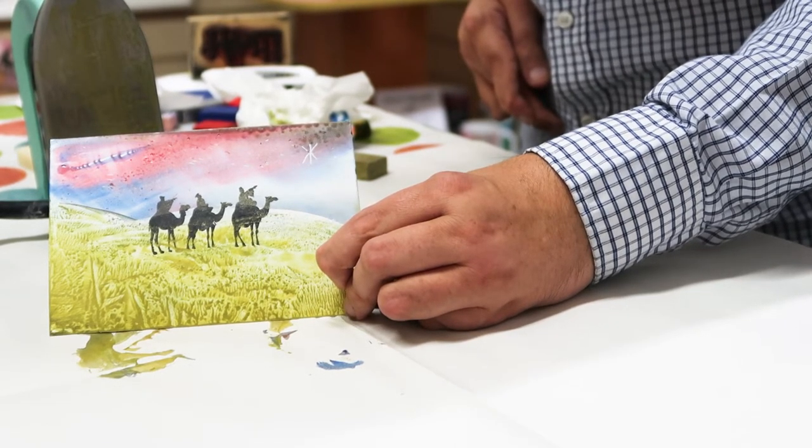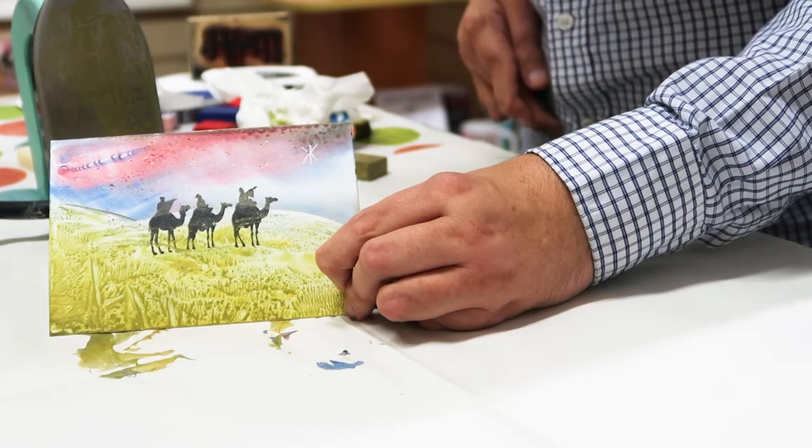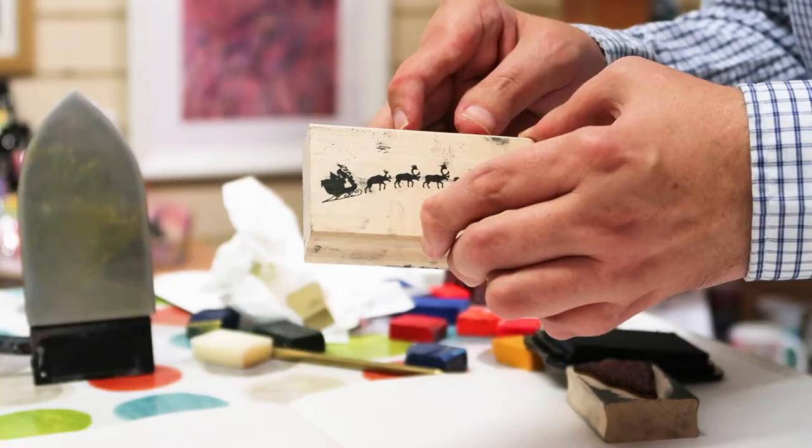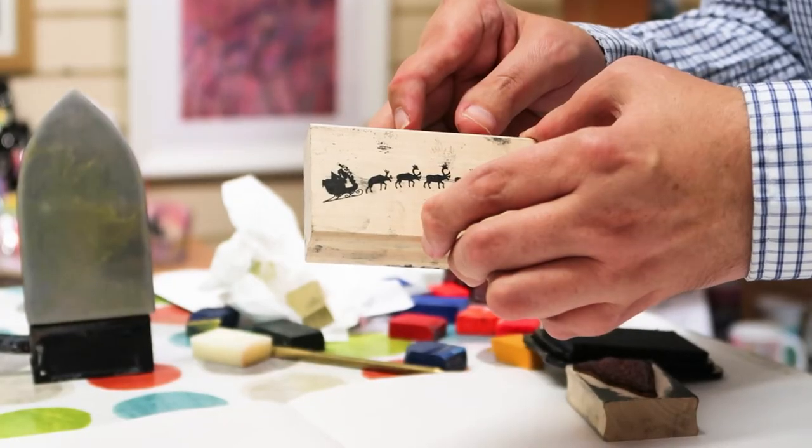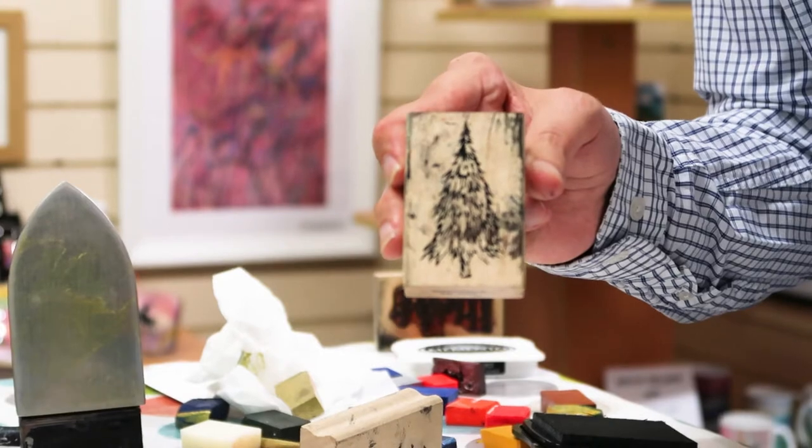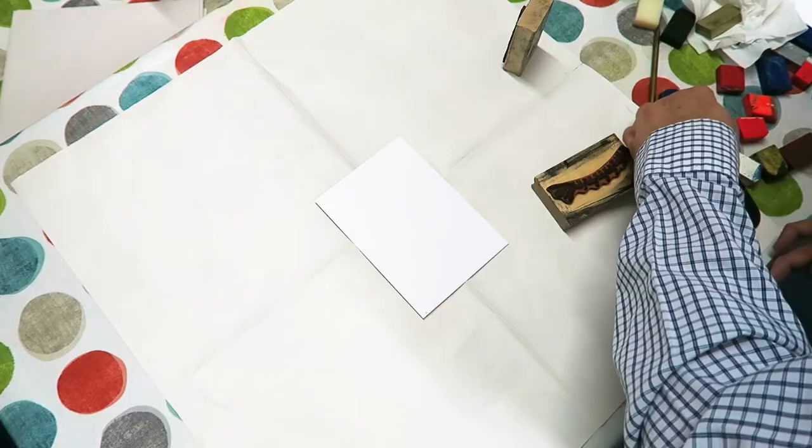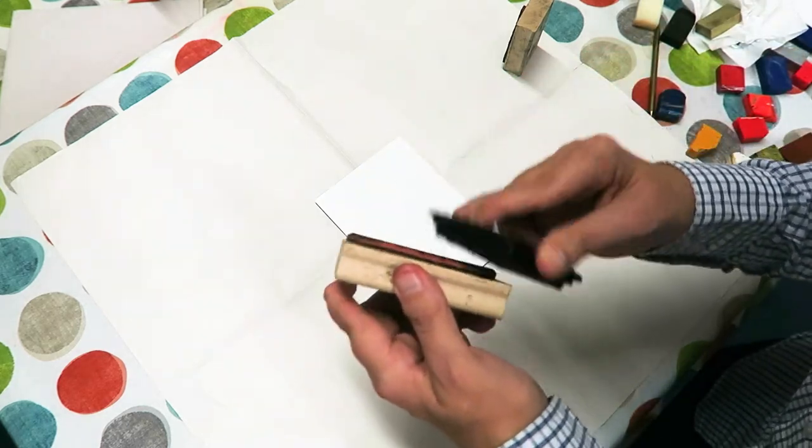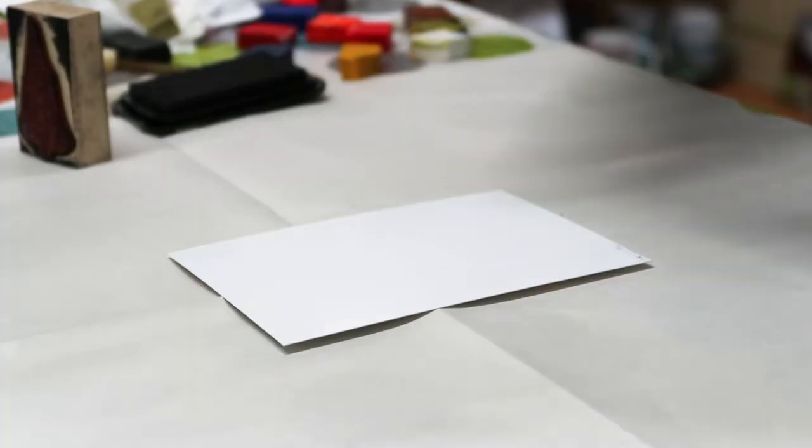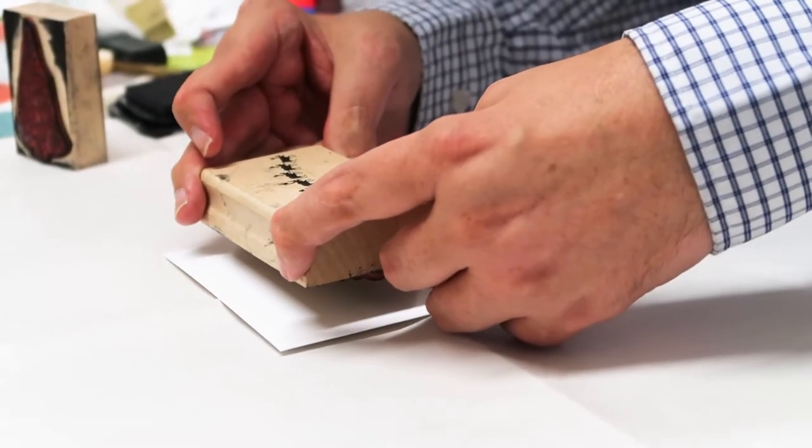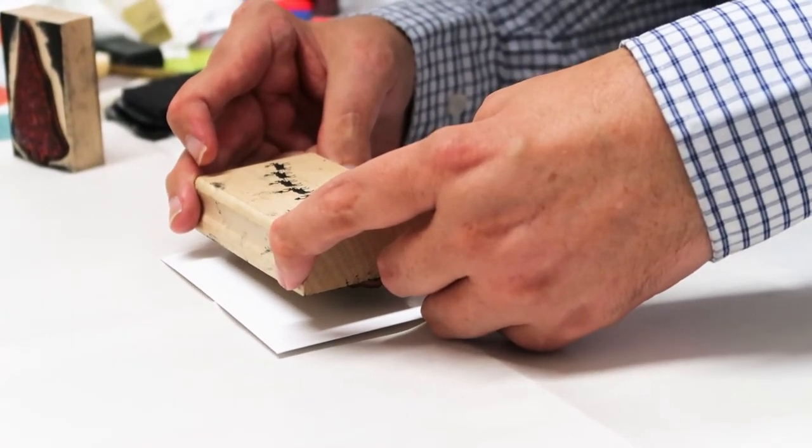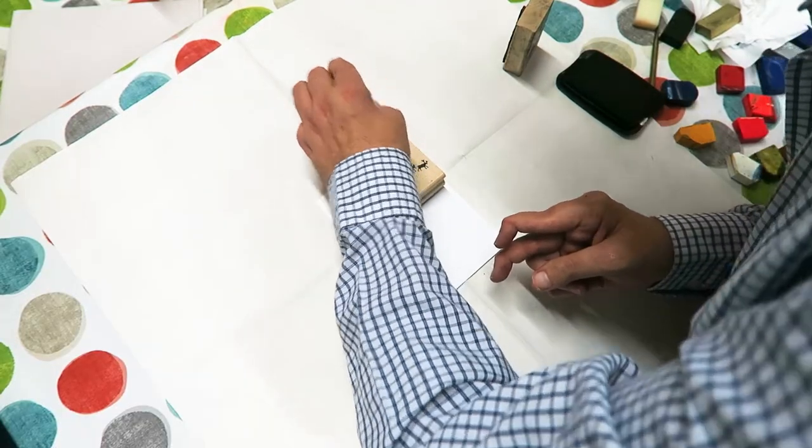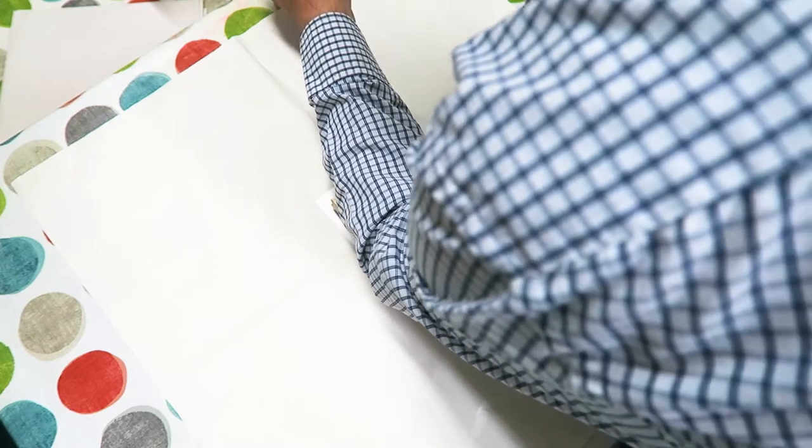We're now going to make our second card using Santa and the reindeers and the fir tree stamp. I'll firstly stamp the reindeers, so I'm just going to apply ink again, spin it round, about there, push down. Because I don't have great grip, I use my arm.